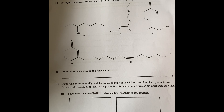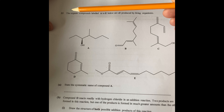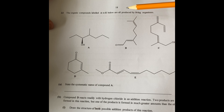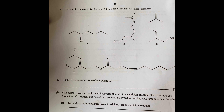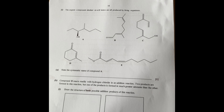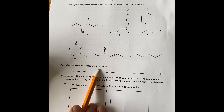Today we're going to talk about this organic chemistry question. Organic compounds A to E below are all produced by living organisms. We have a summary of organic compounds. Now, state the systematic name of compound A — so compound A is this one here.